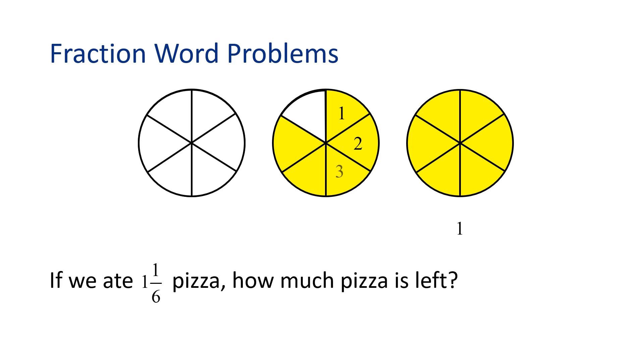I see we have one whole pizza left plus one, two, three, four, five out of six pieces left in another pizza. That's five-sixth pizza. All together we have one and five-sixth pizzas left. We can also say three pizzas minus one and one-sixth pizza equals one and five-sixth pizzas.